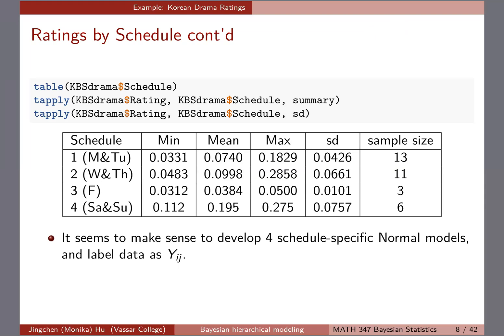Here, the way I'm labeling it: J is the schedule index and I is the drama index. So Y11 would be the first movie in schedule one.